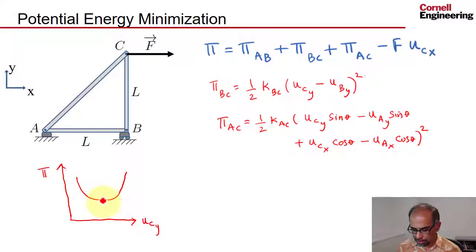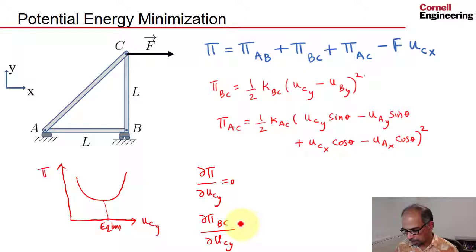I can find that by differentiating π with respect to u_cy and setting that to zero. That will give me this minimum point. If I differentiate π_BC versus u_cy, I will get k_BC times (u_cy minus u_by), so you get a linear term with the vertical displacement here and vertical displacement here.